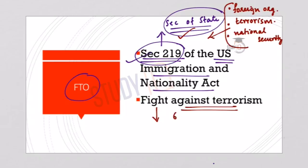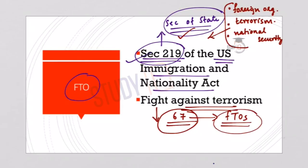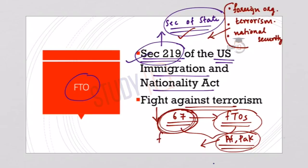At present, 67 terrorist organizations are on the US list of FTOs. These include Hamas, Hezbollah, Al-Qaeda and its regional branches, Islamic State, Boko Haram, and others. Many organizations on this list are based in Pakistan and Afghanistan and pose a direct threat to India — for example, Jaish-e-Mohammad, Lashkar-e-Taiba, and Lashkar-e-Jhangvi. Organizations like Indian Mujahideen, LTTE, and Harkat-ul-Jihad are also on the list of 67 FTOs, making this significant for India as well.